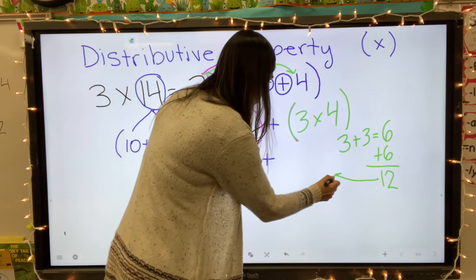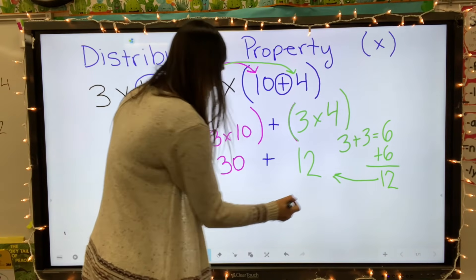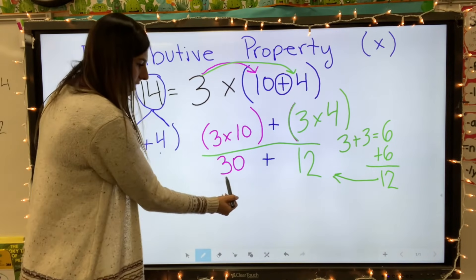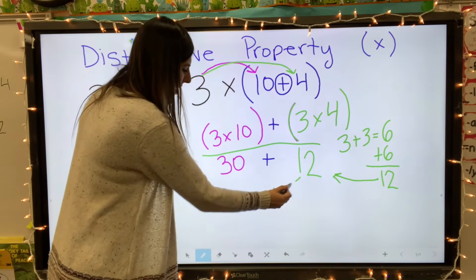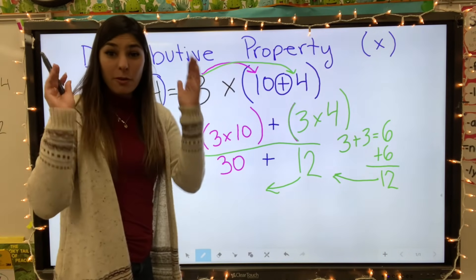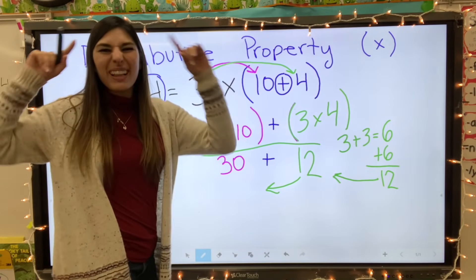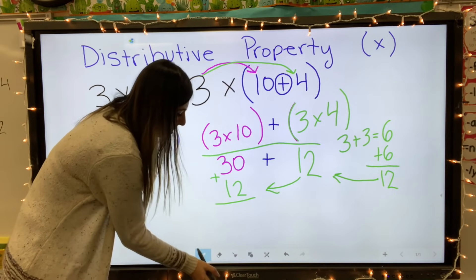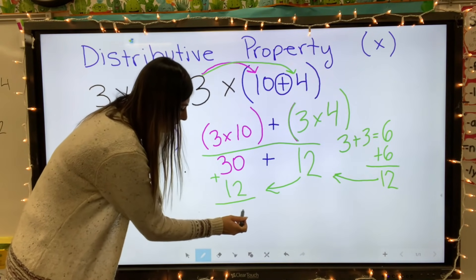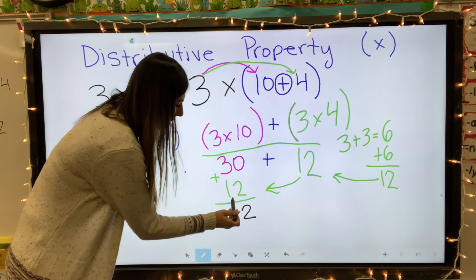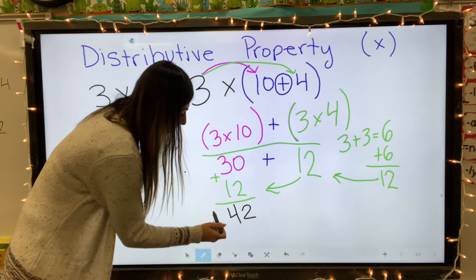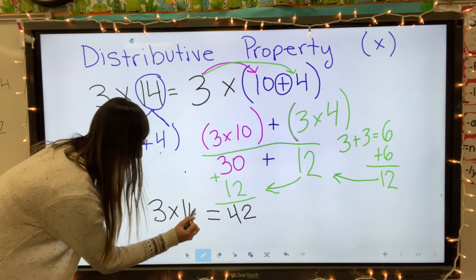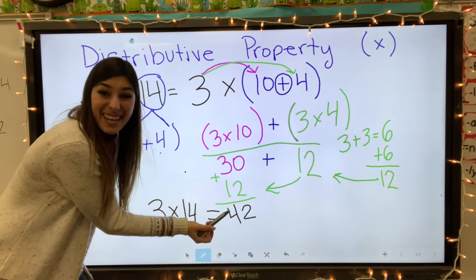Three plus three equals six — that's one double. Six plus six equals twelve. So three times four equals twelve. I'm going to bring this twelve over here. Now I need to solve thirty plus twelve. I'm going to write it vertically — easier on the brain. Ones first: zero plus two equals two. Three plus one equals four. So three times fourteen equals forty-two!